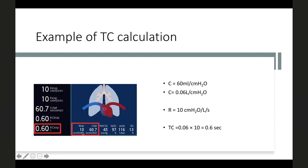Example of time constant calculation: the machine gives resistance and static compliance values. If compliance is 60 ml/cmH2O (0.06 L/cmH2O) and resistance is 10 cmH2O/L/s, the time constant = 0.06 × 10 = 0.6 seconds. Therefore, expiratory time per the planned IE ratio should be at least 1.8 seconds or more to allow adequate exhalation.